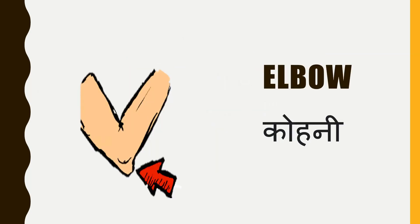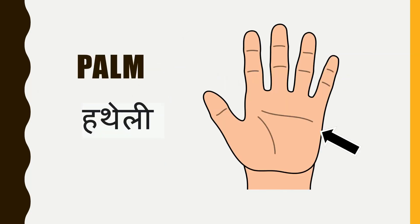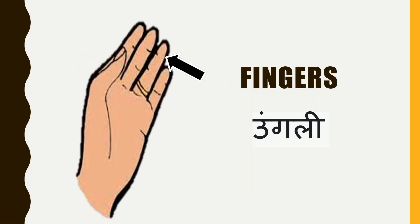Elbow, and in Hindi, we call it kohni. Palm, and in Hindi, it is called hateli. Fingers, and in Hindi, it is ungli.